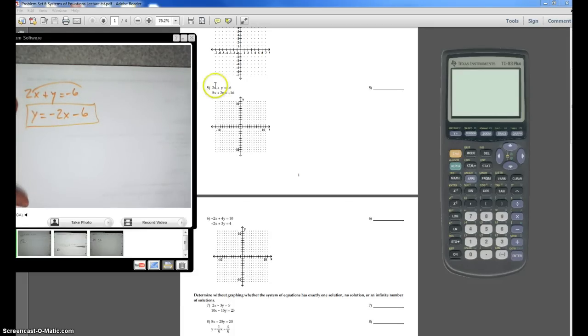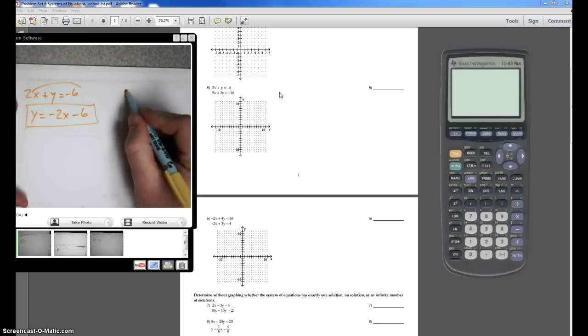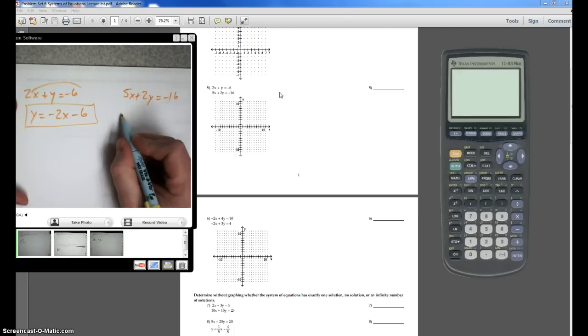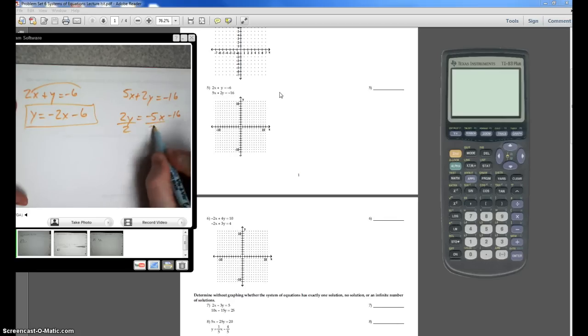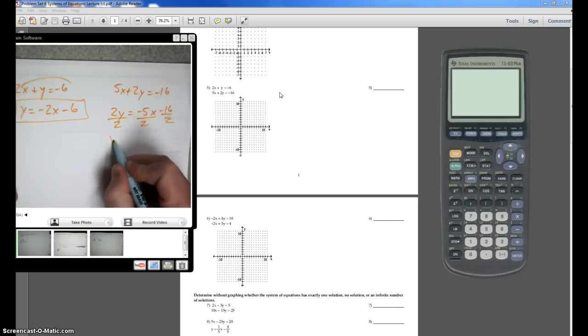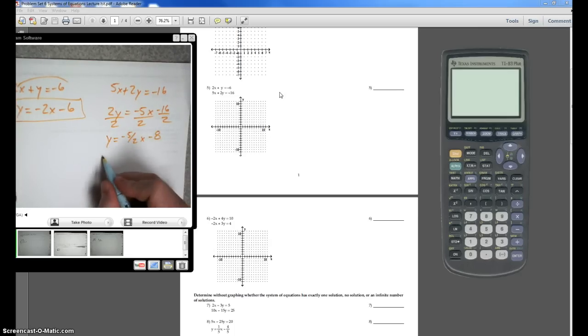The other equation here on number 5 is 5x plus 2y equals negative 16. So I'm going to solve for y. Move my 5x over and divide it by 2. y equals negative 5 halves x minus 8, and 5 halves is actually 2.5.